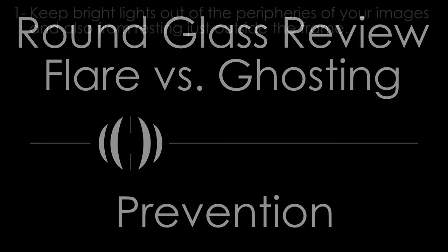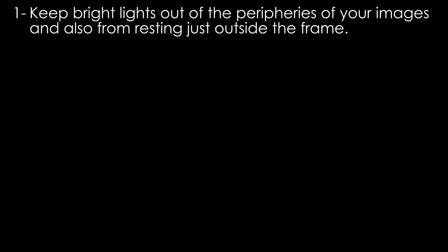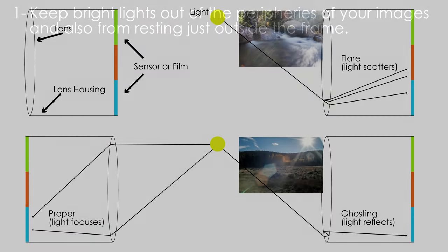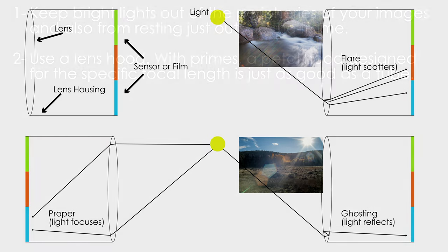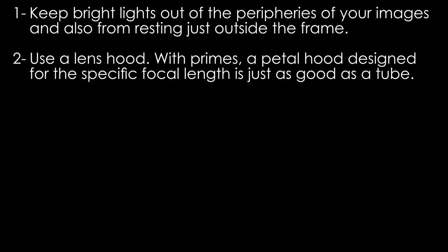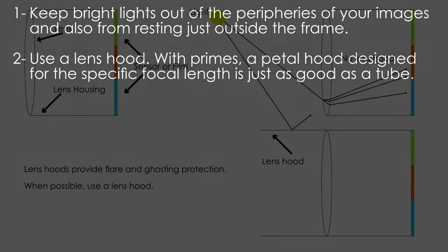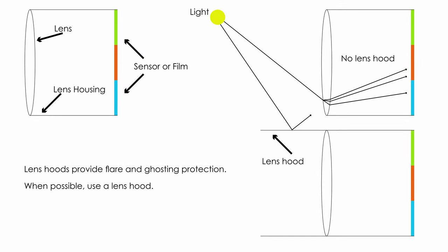Here are a series of tips to help you reduce or eliminate flare and ghosts in your images. Keep bright lights out of the peripheries of your images and also from resting just outside the frame — both places can cause these issues, requiring you to move around or recompose your subject. Use a lens hood: with primes, a petal lens hood designed for the specific focal length is just as good as a tube, but a generic petal hood not designed for that focal length is worse than a tube. Lens hoods give you more flexibility working in full sun or with strong source points like overhead lights.